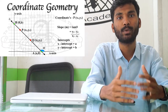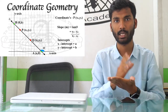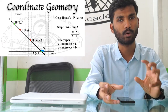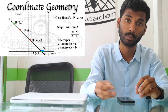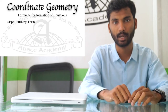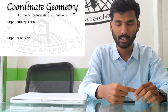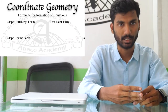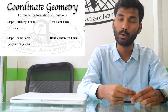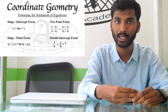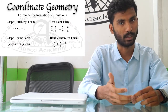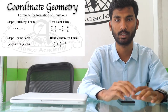Let's move to the formation of equations. If you've understood coordinates, slope, and intercept, 50% of the topic is done. The next part is all about substituting values into formulas. There are basically four formulas for forming the equation of a line: slope-intercept form, slope-point form, two-point form, and double intercept form. These are: y = mx + c; y - y1 = m(x - x1); (y - y1)/(x - x1) = (y2 - y1)/(x2 - x1); and x/a + y/b = 1.